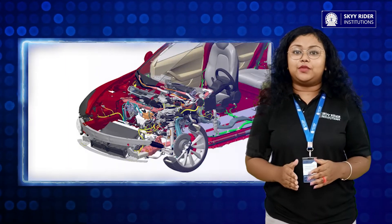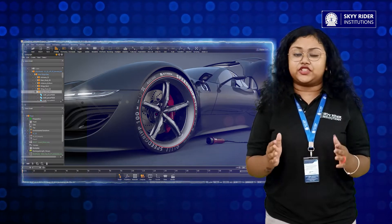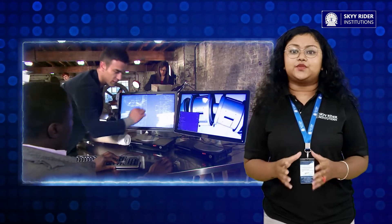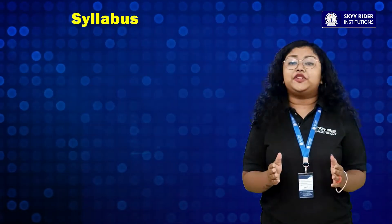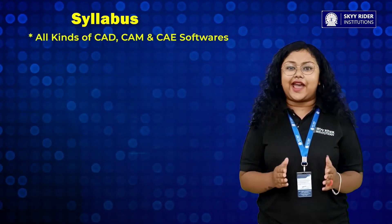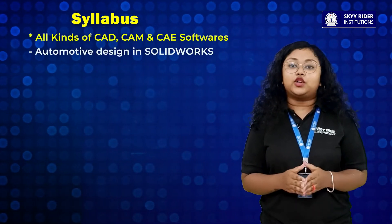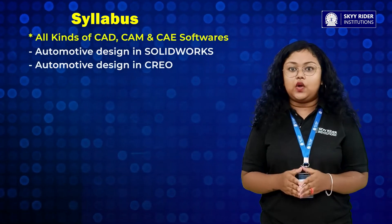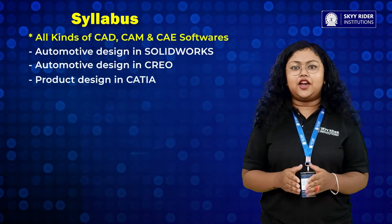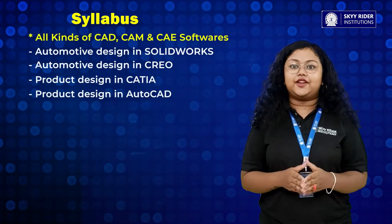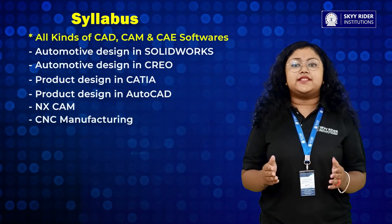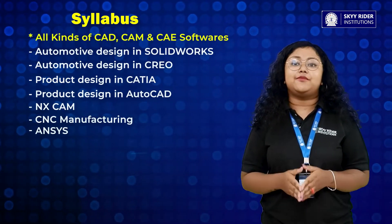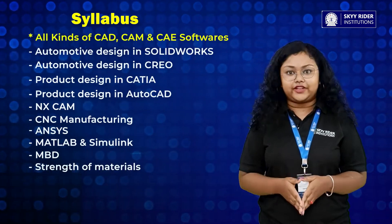In the last four months, you will be doing various kinds of industrial projects, and in the first six months, you will be learning all kinds of software from the syllabus. Coming to the syllabus, in this course you will be learning all kinds of CAD, CAM, and CAE software like Automotive designing in SolidWorks, Automotive designing in Creo, Product designing in CATIA, Product designing in AutoCAD, NX CAM, CNC Manufacturing, ANSYS, MATLAB Simulink, MBD, and Strength of Materials.